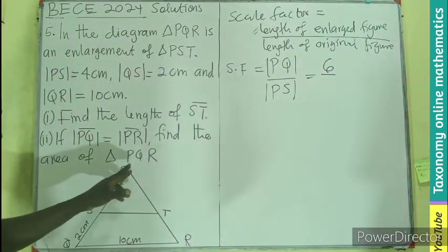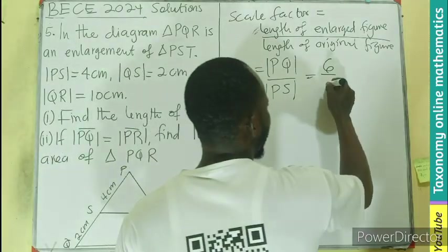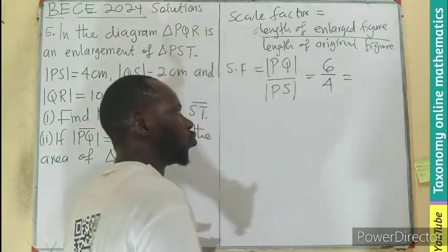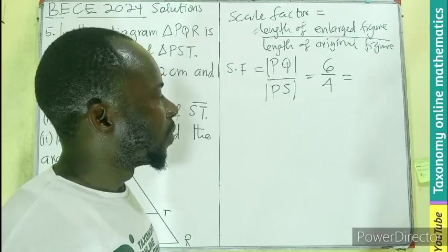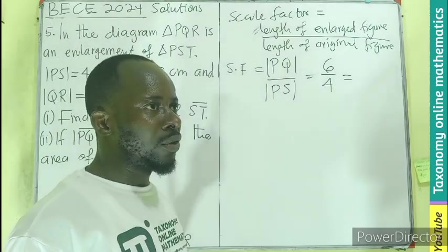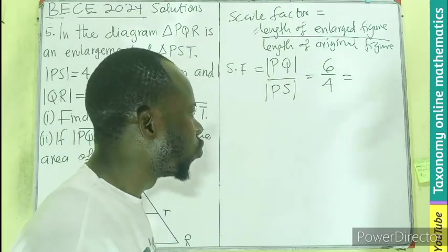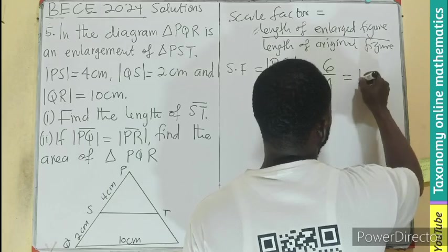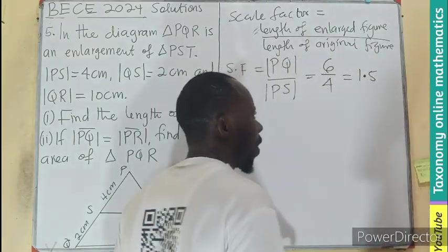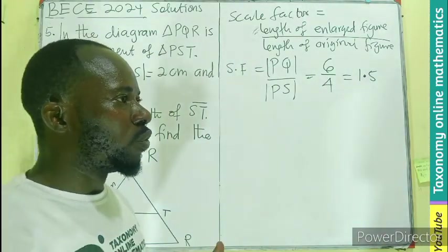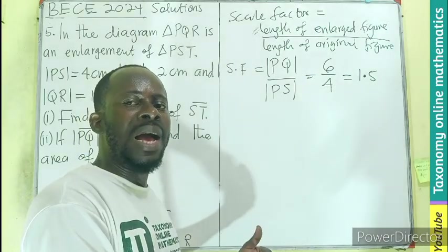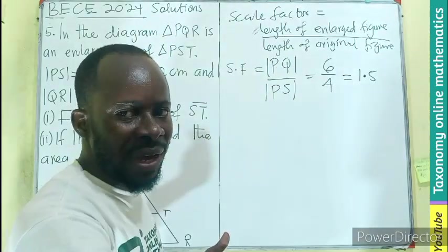Then PS is going to be 4. So we know 2 can divide it. 3 divided by 2 will give us 1.5. So 1.5 is the scale factor, which is used to transform the original figure to give us the large figure.